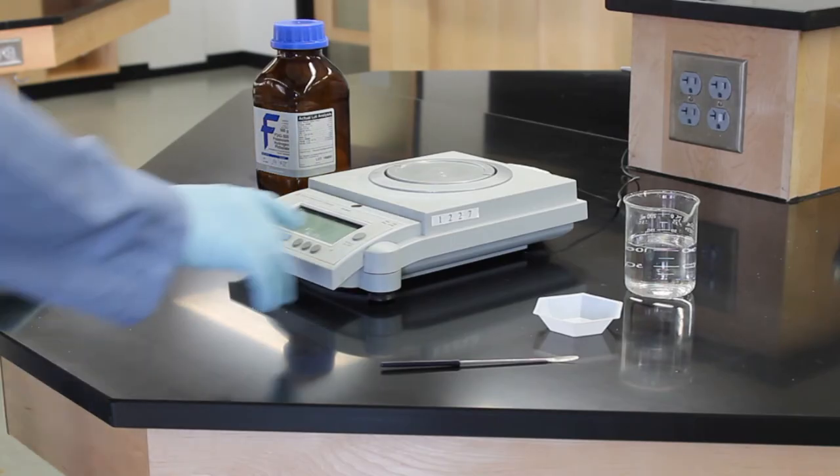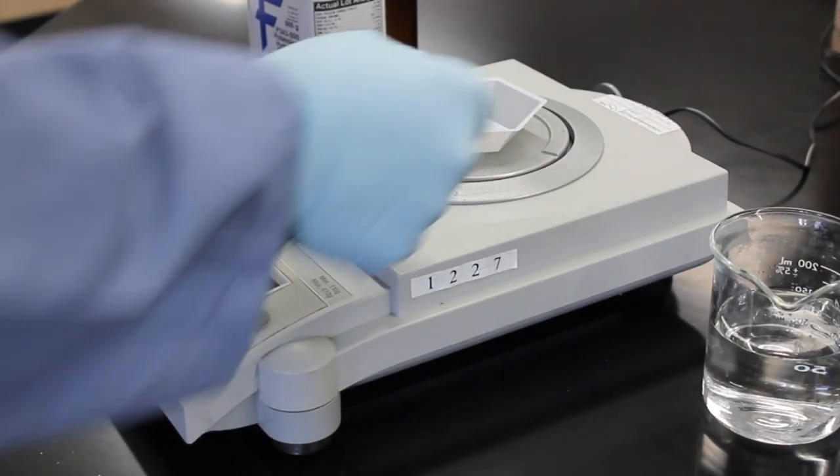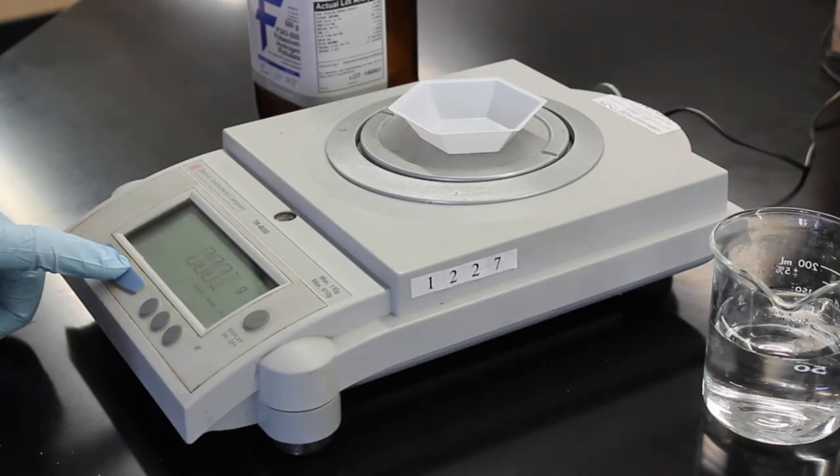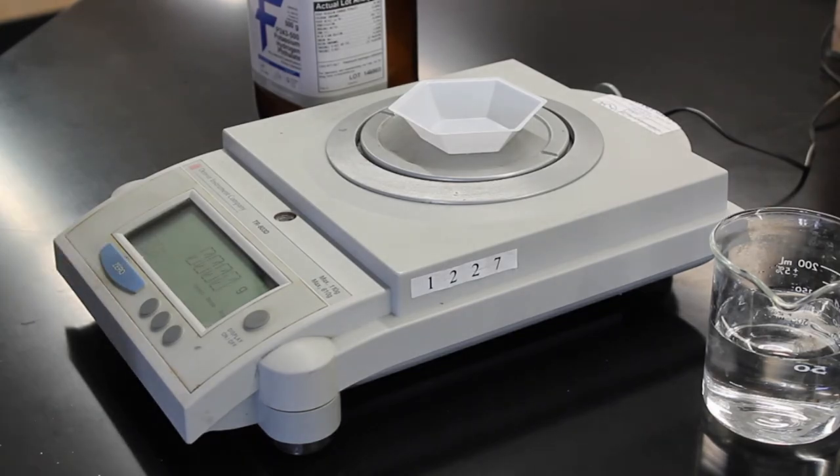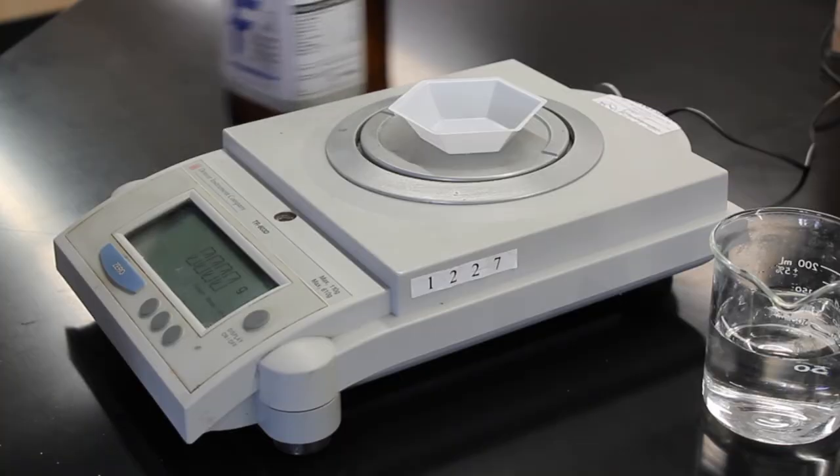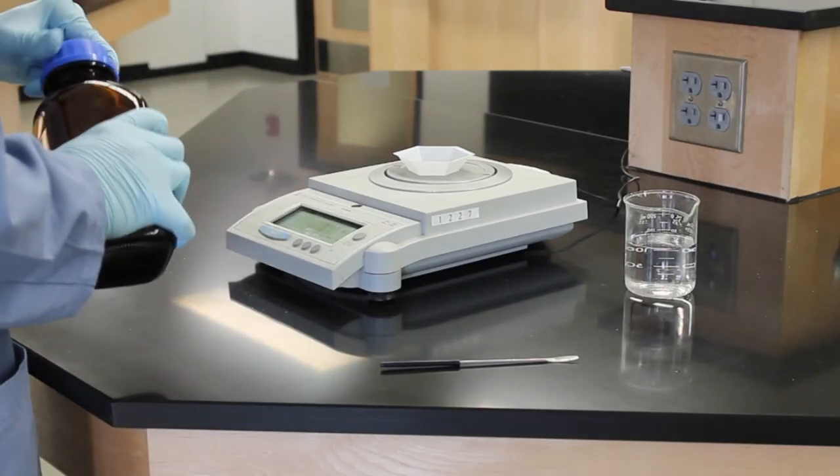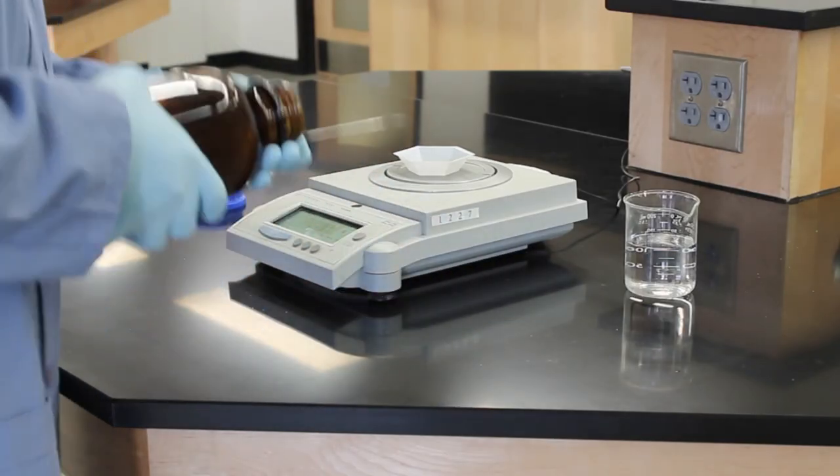Start by turning on your balance and placing a transfer container onto the balance. Tare your container so the mass is set to zero. Now measure out the desired amount of transfer material you need.